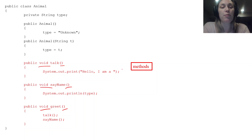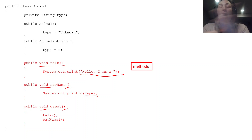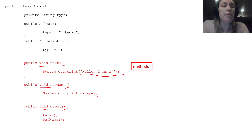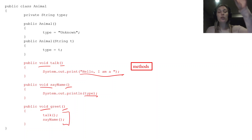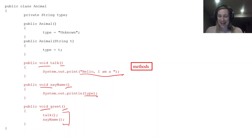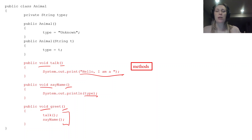The talk method just prints off a statement. The sayName method prints off the type of the animal you created. In the greet method, there are two statements we haven't seen before — method calls with no dot notation in front. They're calling talk and sayName directly. We'll see what happens when we run the greet method shortly.